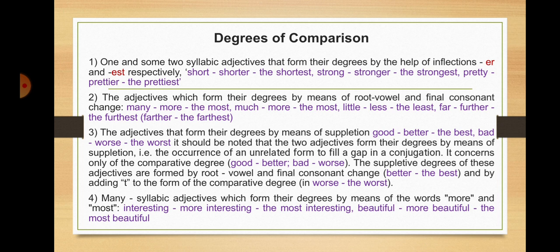The second group contains adjectives which form their degrees by means of root vowel and final consonant change: 'many/more/the most', 'much/more/the most', 'little/less/the least', 'far/further/the furthest'. The third group is adjectives that form their degrees by means of suppletion — for example, 'good/better/the best', 'bad/worse/the worst'. It should be noted that these two adjectives form their degrees by suppletion, that is, the occurrence of an unrelated form to fill a gap in a paradigm — this concerns only the comparative degree: 'good→better', 'bad→worse'.